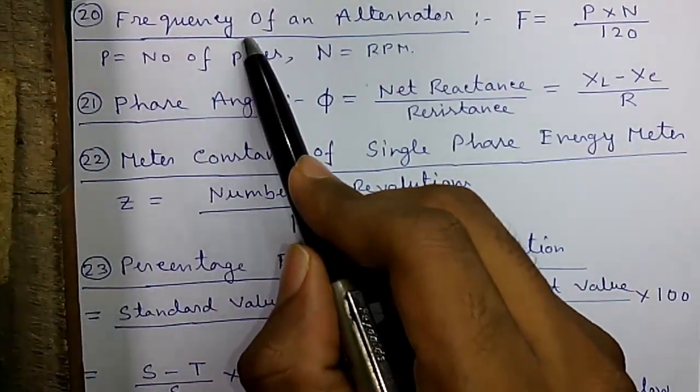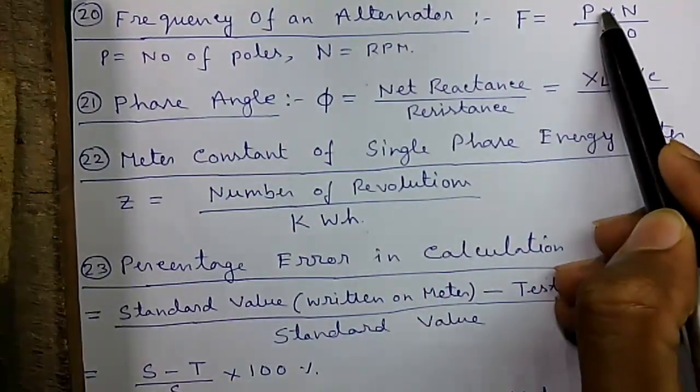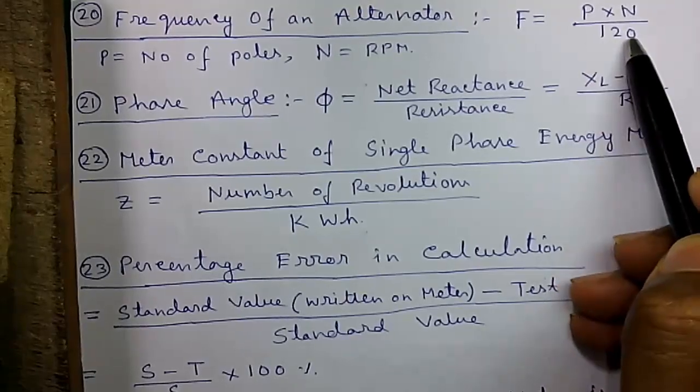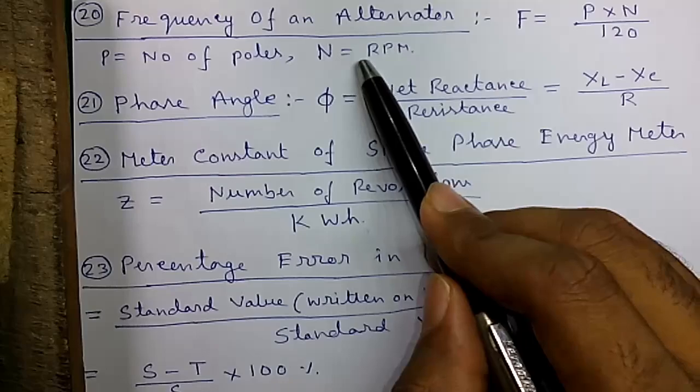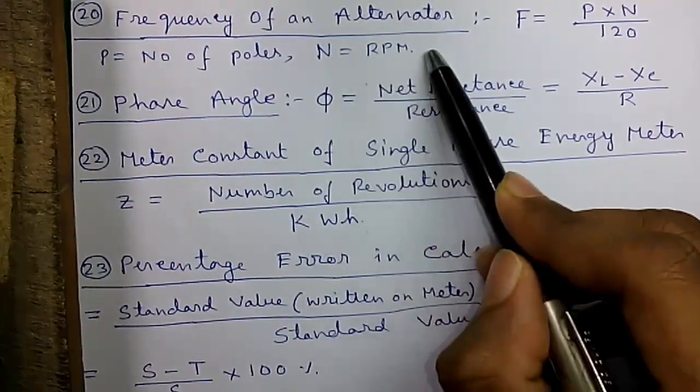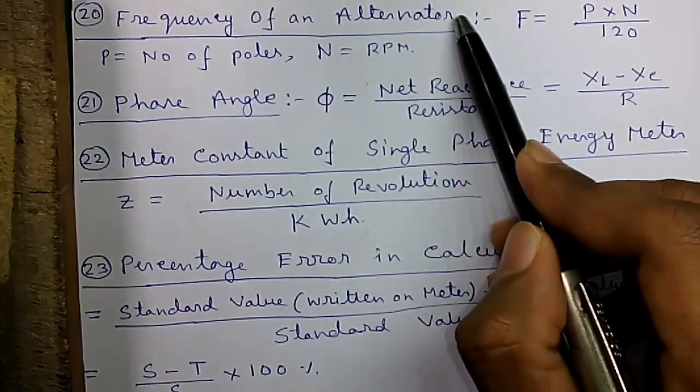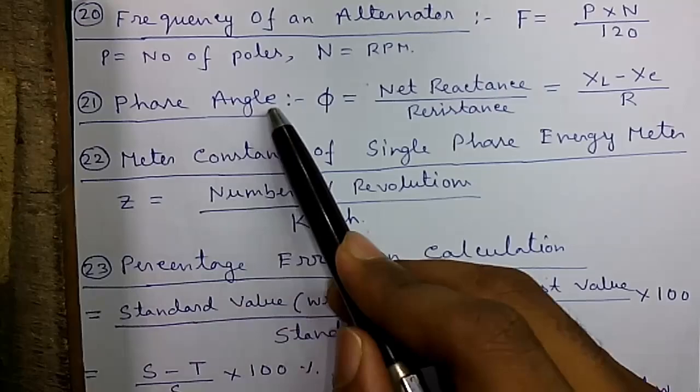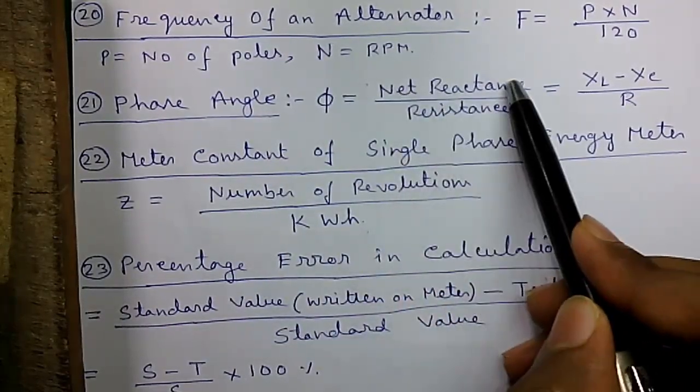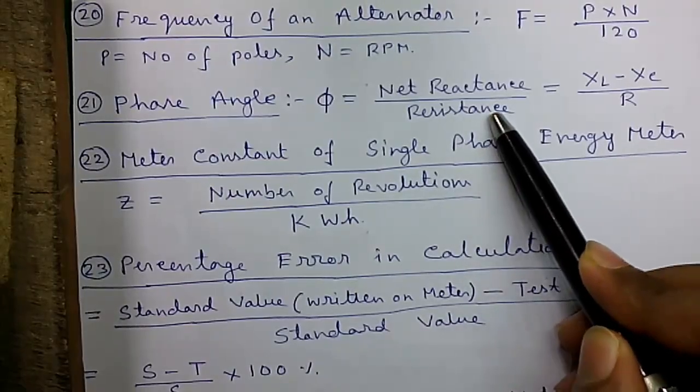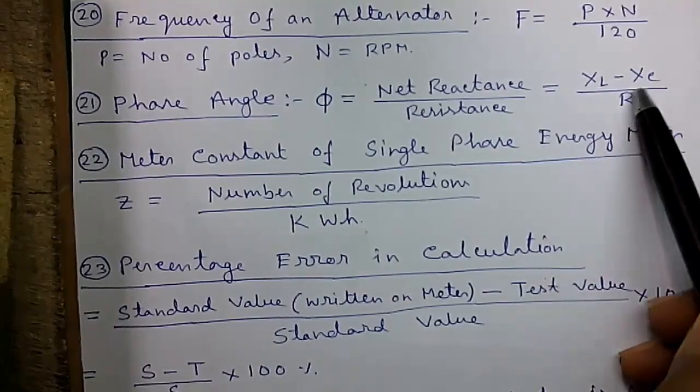Formula 20: Frequency of an alternator is given by F equals P into N by 120, where P is the number of poles in an alternator and N is the RPM or revolutions per minute. Remember, alternators are also called the dynamo or the generator. Formula 21: The phase angle φ is given by net reactance divided by resistance in an LRC circuit.